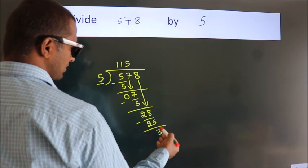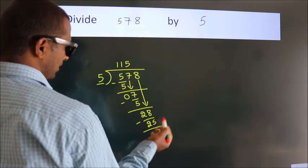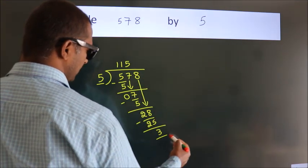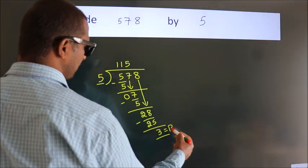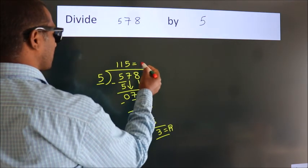After this, no more numbers to bring down. So we stop here. This is our remainder. This is our quotient.